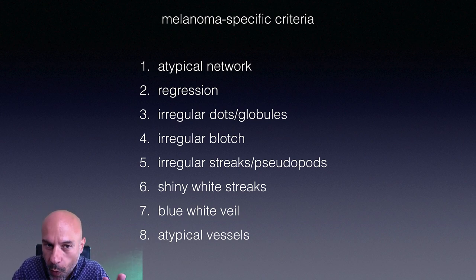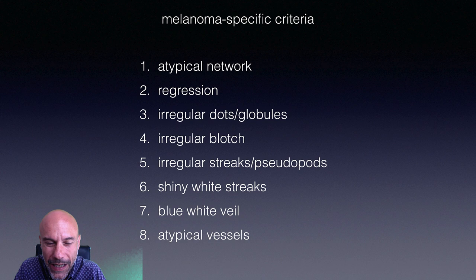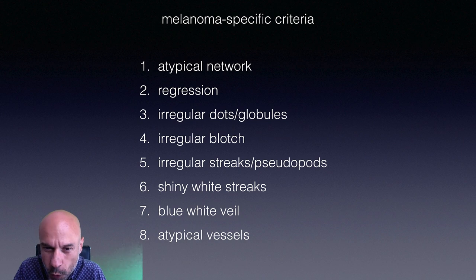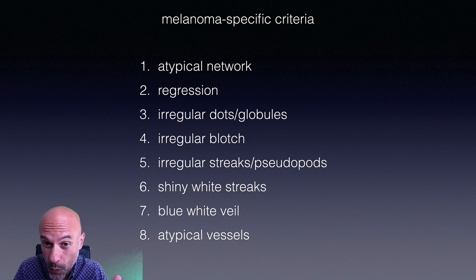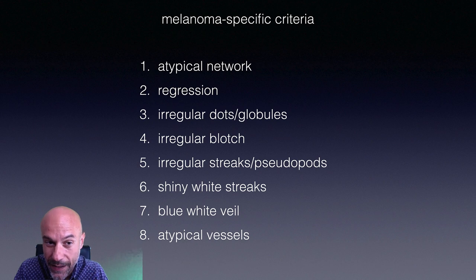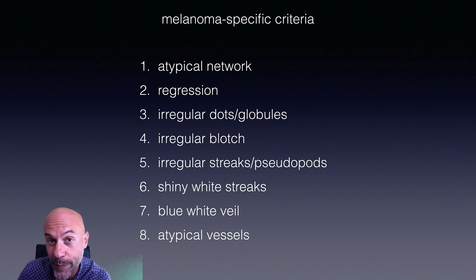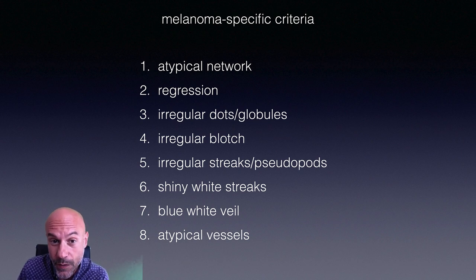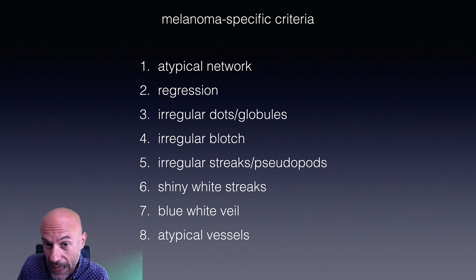Now we will go through these criteria analytically in the next minutes. But before that, I would like to draw your attention to the fact that in many of these criteria, if you look at their names, you see two words — and the first one is always 'irregular' or 'atypical' — which means there is also a typical counterpart. So atypical network means there is also a typical network; irregular globules means there are also regular globules.